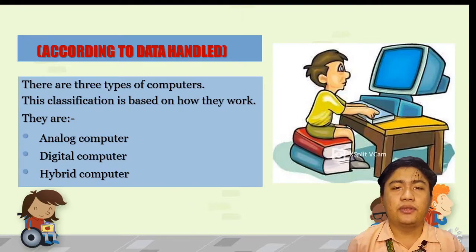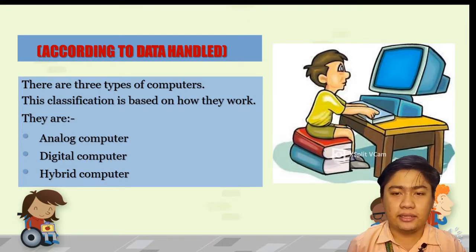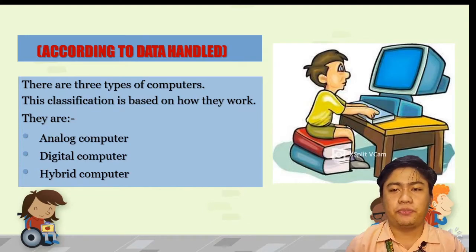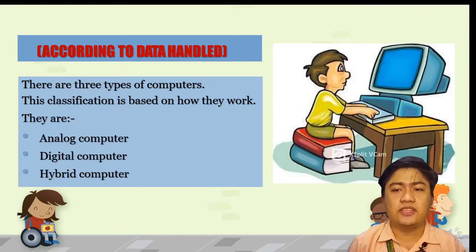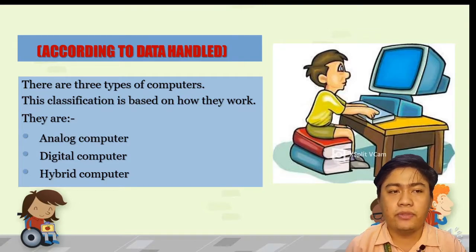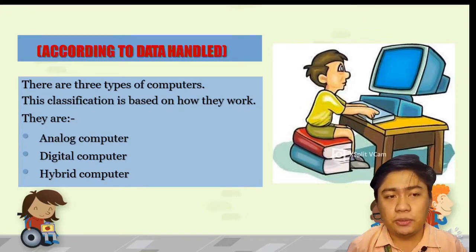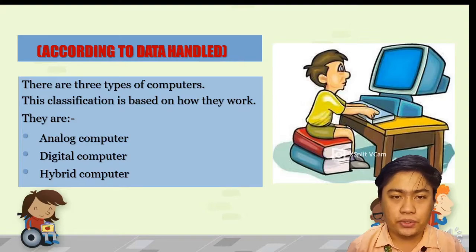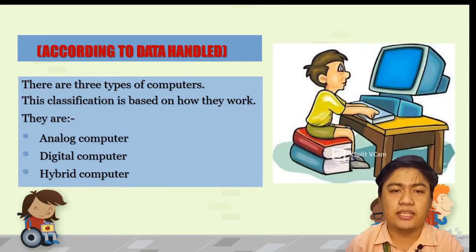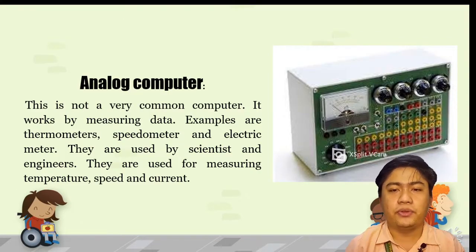Let's proceed now to the classification of computer according to data handled. There are essentially two different types of computer processing, each made possible by different kinds of circuitry and each suitable for different purposes. We have three types of computers: analog computer, digital computer, and hybrid computer.